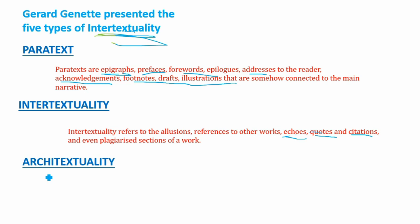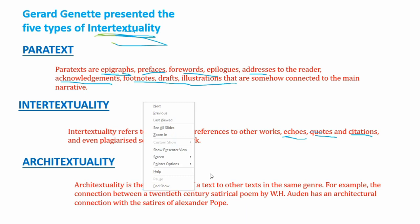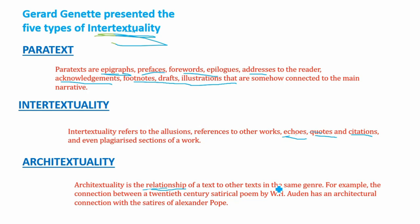The third type is architextuality. Architextuality refers to the relationship of a text to other texts in the same genre. For example, the connection between a 20th-century satirical poem — like one by W.H. Auden — and other satirical poems that share the same genre characteristics and features. These shared genre features and attributes are called architextuality.